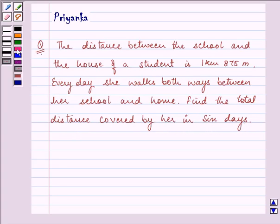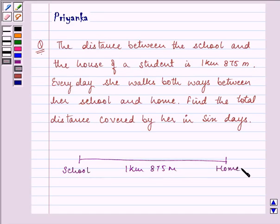So let us first analyze what the question is saying. Let this be the distance, that is 1 kilometer 875 meters. Let this be the school and this place be the home of the child.